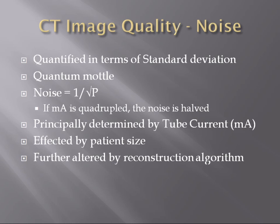Another parameter that will affect the MA and subsequently the noise is patient size. If we have a patient that is twice as big, a greater percentage of the x-ray beam is going to be attenuated before it hits the detector. As far as the detector knows, it's dealing with a reduced MA, which will increase the amount of noise. Furthermore, the reconstruction algorithm used to generate your images can also have an effect on perceived noise.